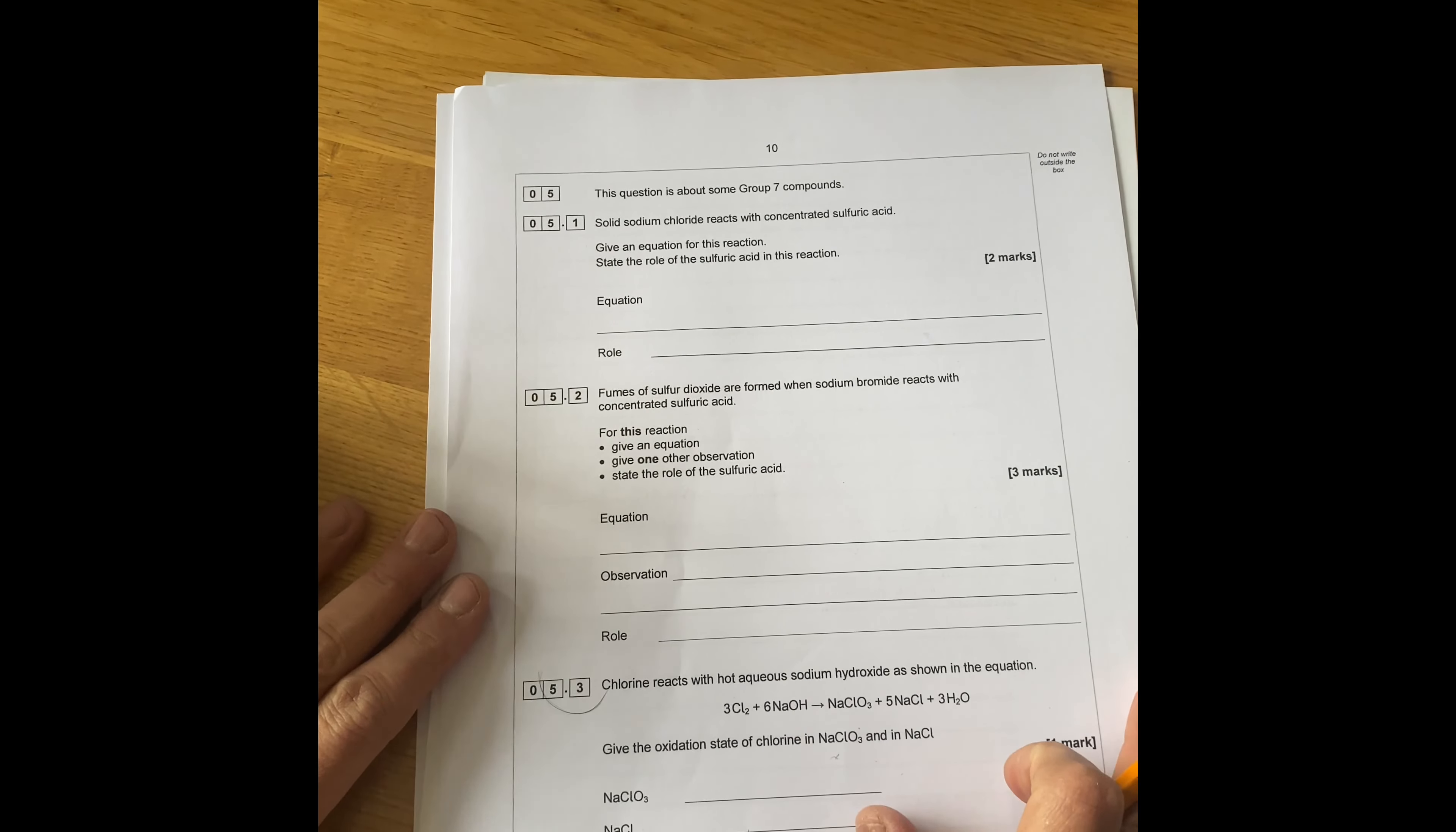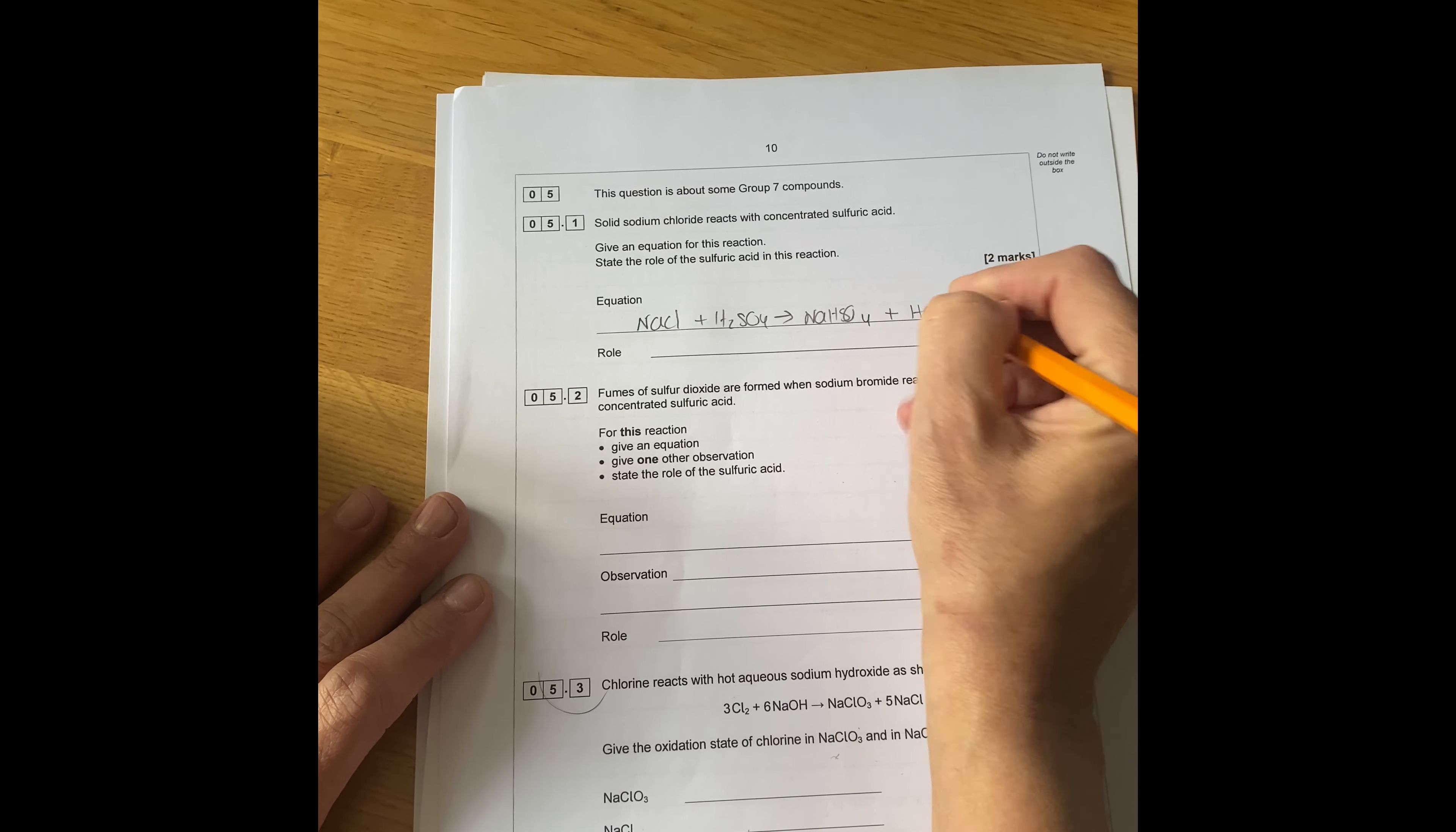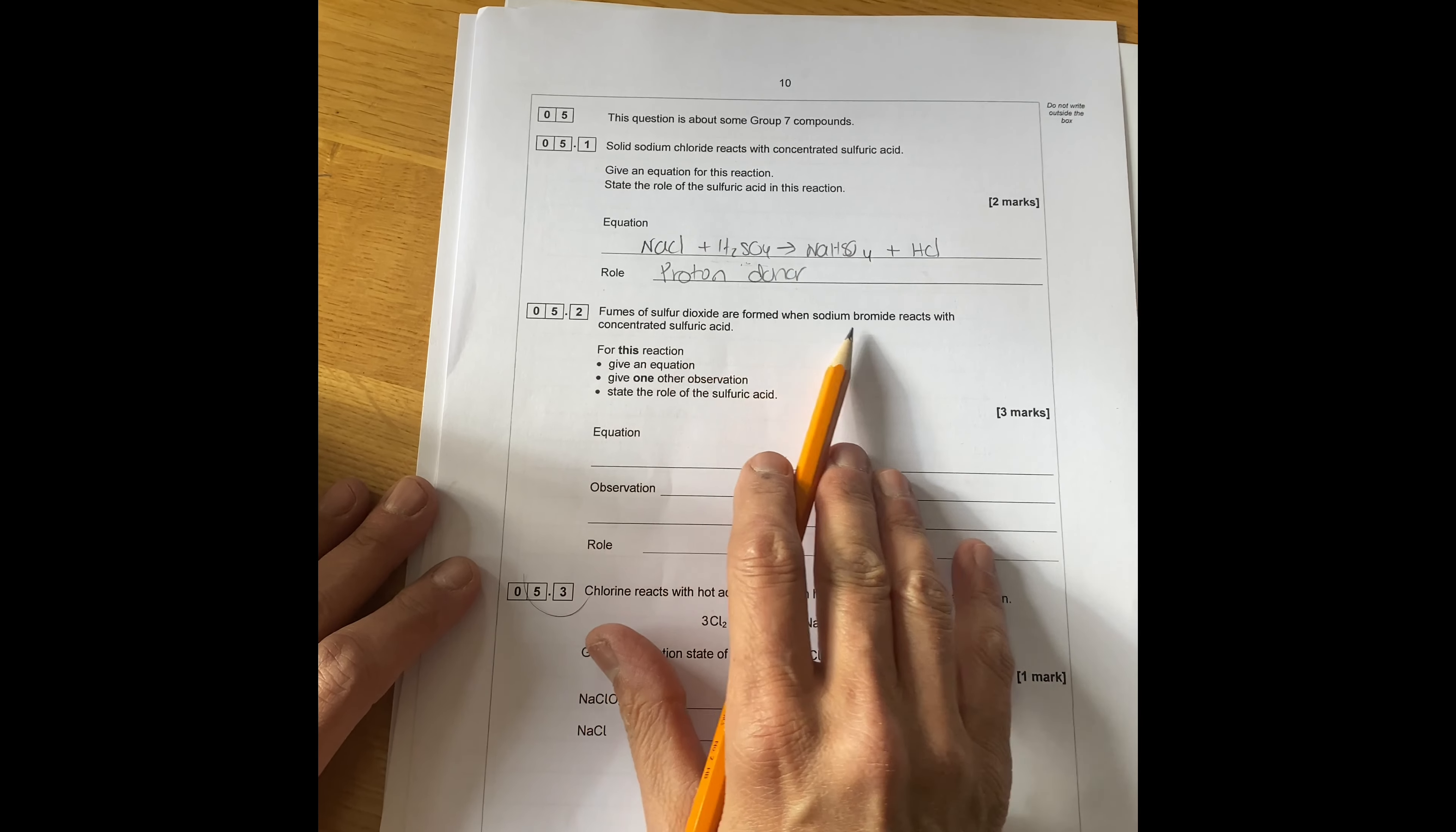So the answer to that is, you need to know the equations of concentrated sulfuric acid with sodium chloride. So put sodium chloride plus H2SO4 goes to sodium hydrogen sulfate plus HCl. And the role of sulfuric acid in this reaction is a proton donor because an acid is a proton donor.